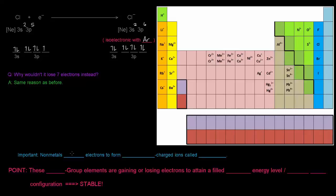Non-metals, to the right of that little ladder on the periodic table, gain electrons to form negatively charged ions called anions. The main group elements are gaining or losing electrons to attain a filled outer energy level or noble gas configuration, and that is really stable.